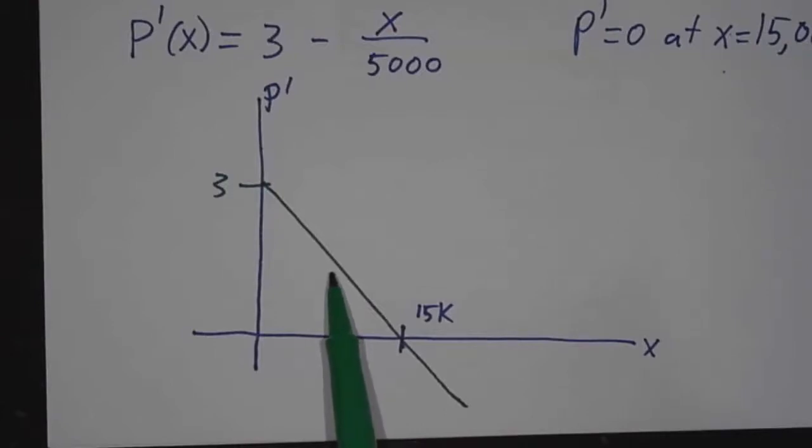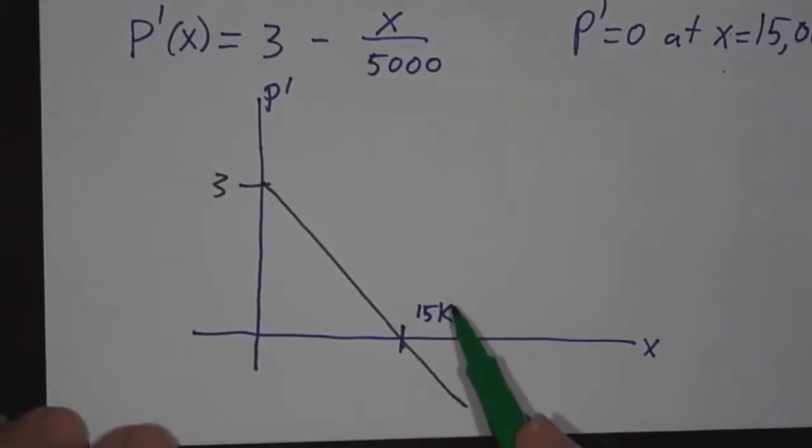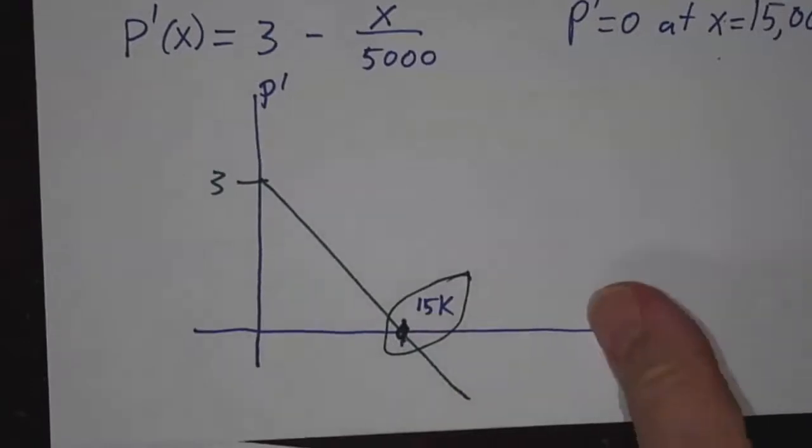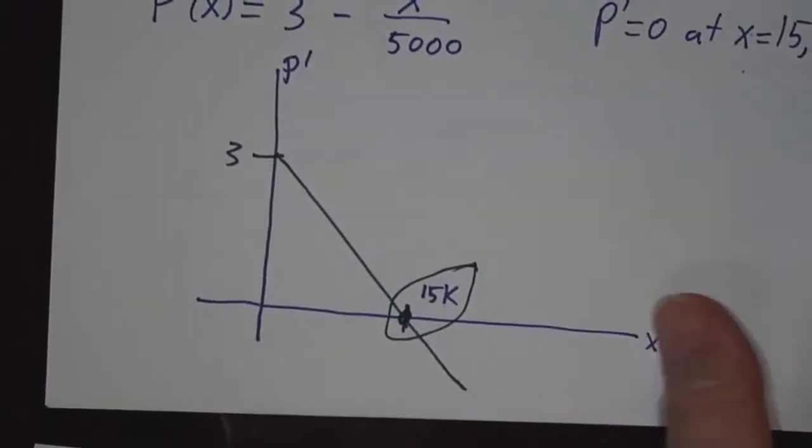So if we're making fewer than 15,000 items, we can make more profit by increasing production. If we're making more than 15,000, then each additional widget is costing us money, and we should lower production. So the optimal production is where the derivative is 0. What goes up has to stop before it comes down. At the maximum of a function, the derivative is 0.